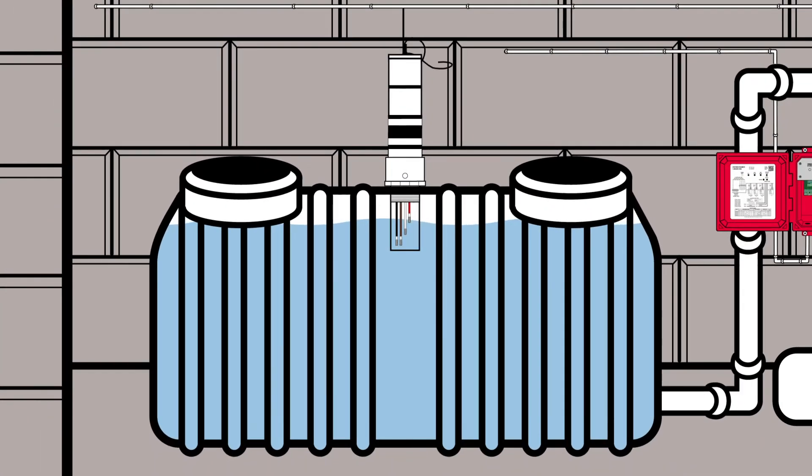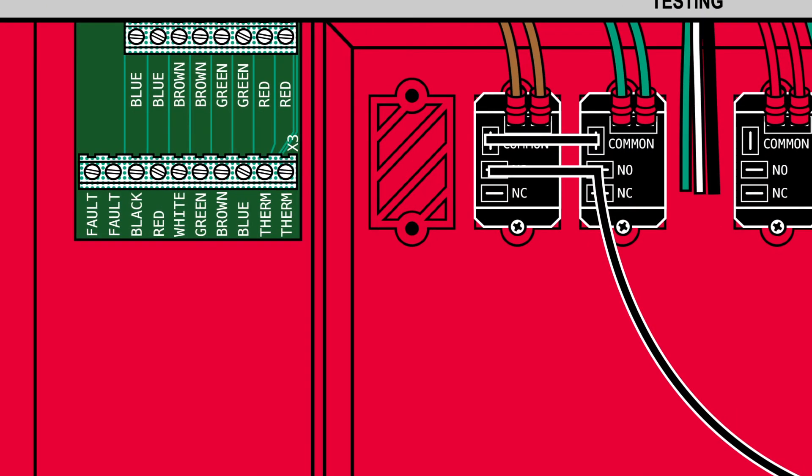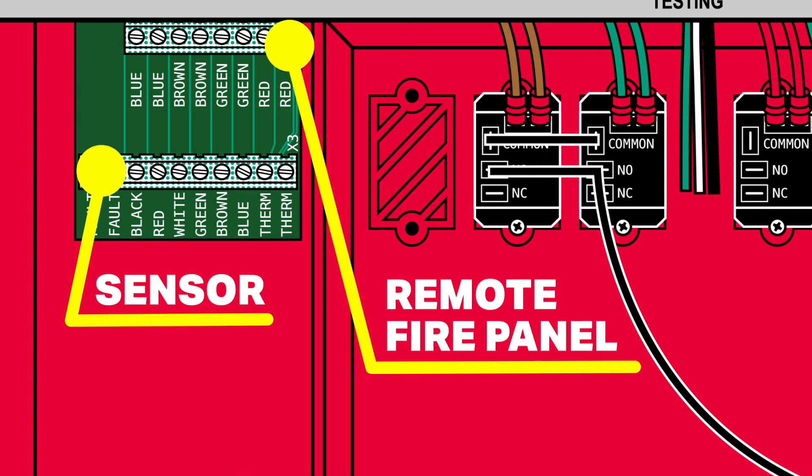The circuit board inside the low-voltage compartment has the bottom terminal block for the sensor connections and the top terminal block for remote fire panel connections.